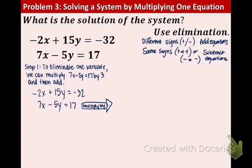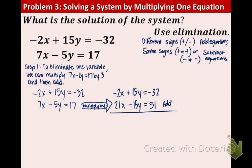The first equation does not change. So we're going to rewrite that as is. In the second equation, we're going to multiply everything by 3. So that means we have 21x minus 15y equals 51. And we're going to add the equations. So that means we have 21x plus a negative 2x. That's 19x. 15y plus a negative 15y cancels out. And lastly, 51 plus a negative 32 is 19.